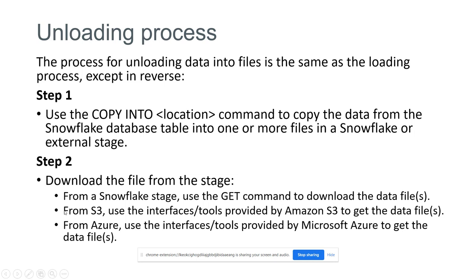If unloading data directly to Amazon S3 buckets, you can easily view those files. Similarly, for Azure containers, Microsoft Azure provides interfaces and tools to view or download those data files. So there are only two steps: first, unload data into an external stage or internal stage; then download those files. If unloading to internal stage, use the GET command to retrieve files; if unloading to external stages like Azure containers or AWS S3 buckets, download the files from there.